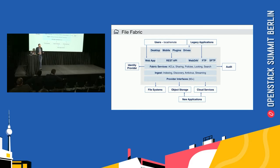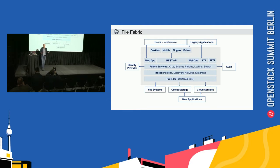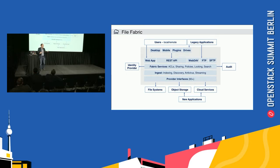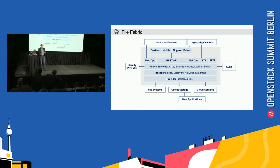Storage Made Easy is a UK company and we produce a product called the Enterprise File Fabric. The File Fabric at its core is a virtual application that can be deployed into any virtualization platform like OpenStack. It provides connectors to 60 different storage backends — it can talk to OpenStack, Ceph, Amazon S3, Google, Dropbox, and pretty much whatever you have. This gives you a single pane of glass view into the storage, so you can see your Amazon storage next to your local file storage next to your Swift storage.